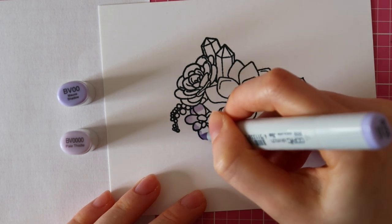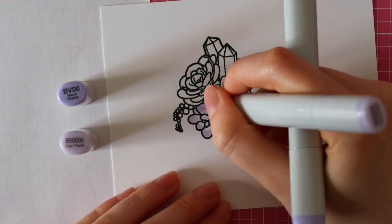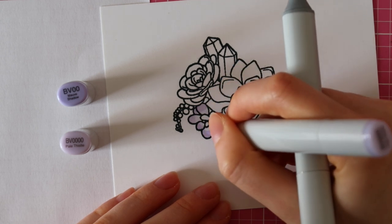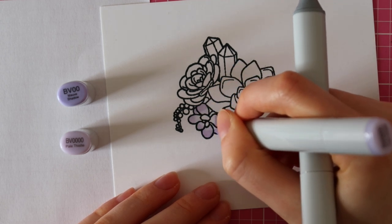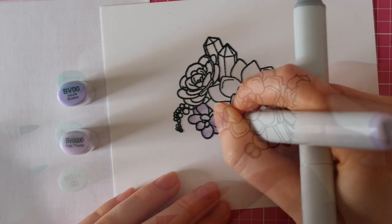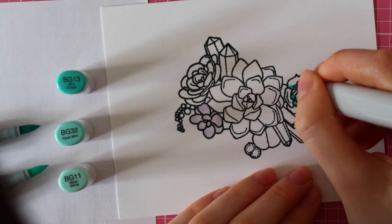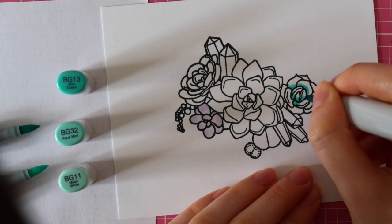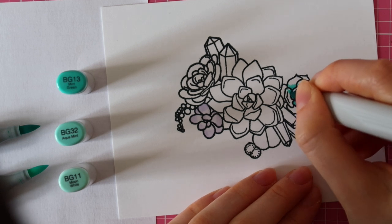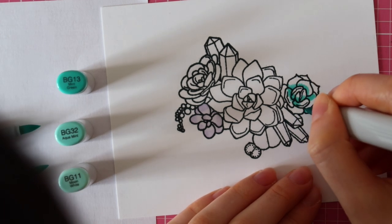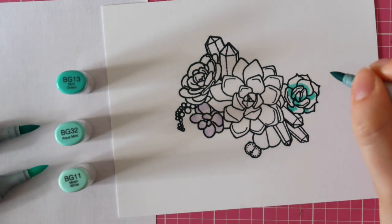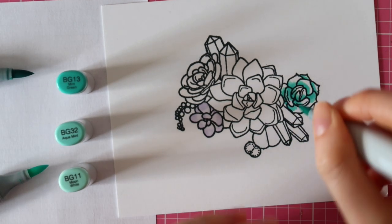First, I am using BV00 to add some shading and then I am blending that out with BV000. I also wanted to add some turquoise and I am using three shades for that: BG13, BG32, and BG11.